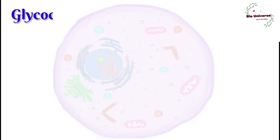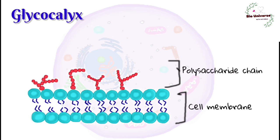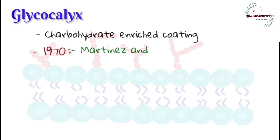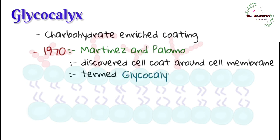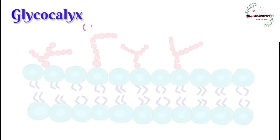Let's start with glycocalyx. The cell membrane of bacteria is surrounded by a paracellular matrix known as glycocalyx. It is a carbohydrate-enriched coating that covers both eukaryotic and prokaryotic cells, particularly bacteria. In 1970, Martinez and Palomo discovered a cell coat around the animal cell and termed it glycocalyx. The word glycocalyx is derived from the Greek words 'glykis' meaning sweet and 'calyx' meaning husk — so glycocalyx means sugar coat.